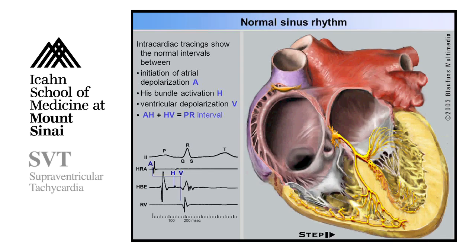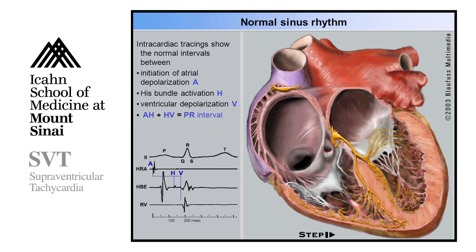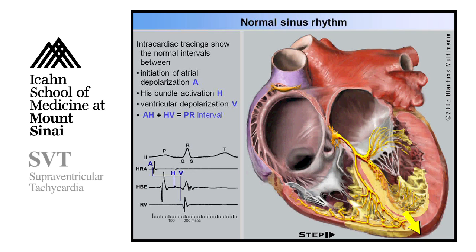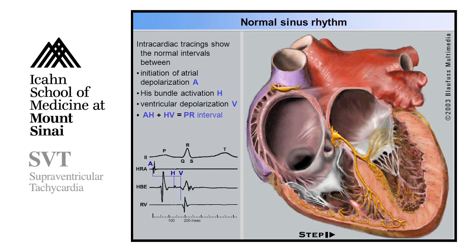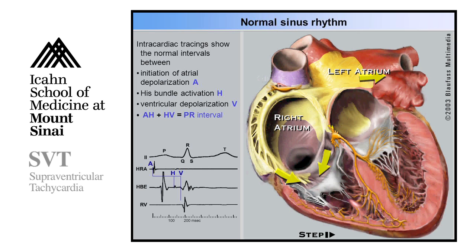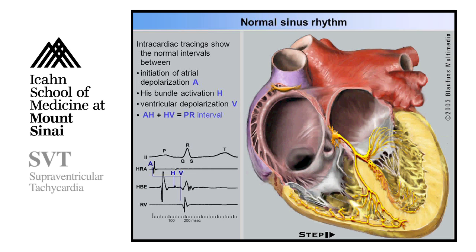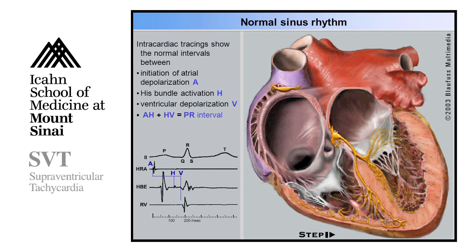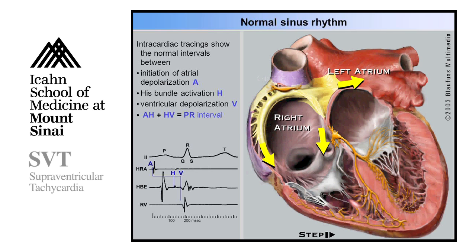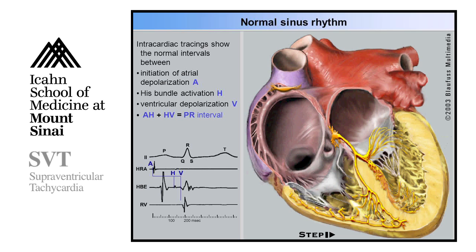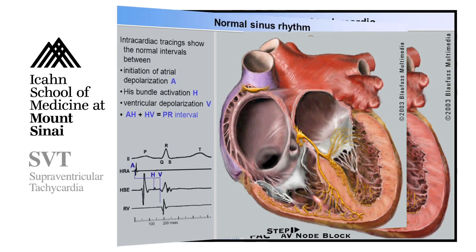Before we talk about the specific SVTs, let's talk about normal rhythm. This cartoon depicts the normal heart — the top chambers, the atria, and the bottom chambers, the ventricles. That's the sinus node, which is the normal pacemaker of the heart. After the top chambers become electrically activated, conduction passes through the central portion called the AV node, which governs the transmission of these electrical impulses to the bottom chambers called the ventricles, and the bottom chambers beat — that's the main pumping effect of the heart.